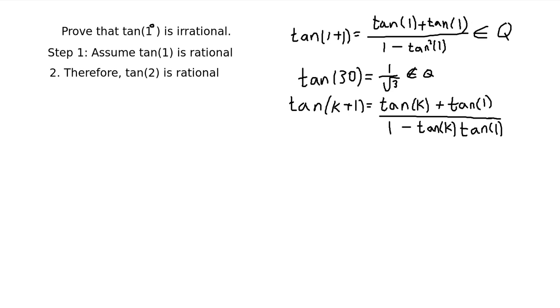Then we can see as long as tangent of k times tangent of one is not one, then this will also be in the rational set. And we see that tangent of one times tangent of k is only equal to one if k were to equal 89.